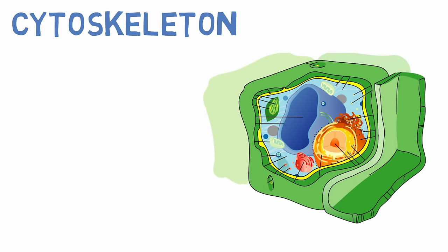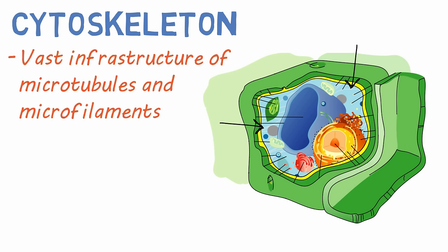The cytoskeleton is the structure and framework of the cell. It contains a vast infrastructure of microtubules and microfilaments. It gives cells their shape and structural support.